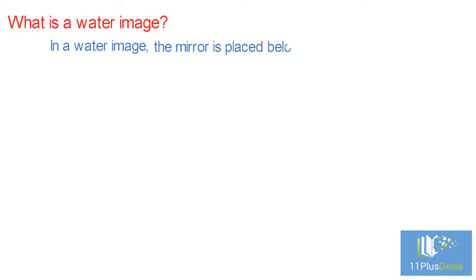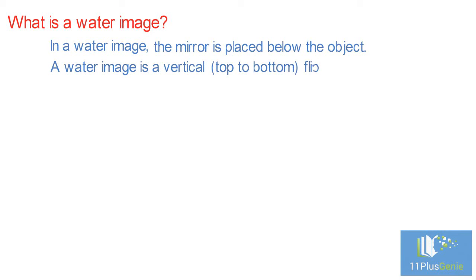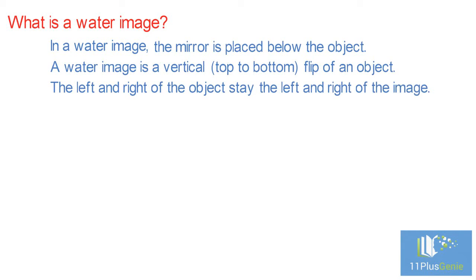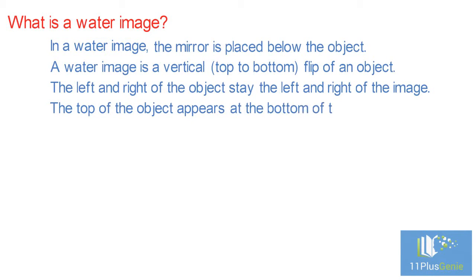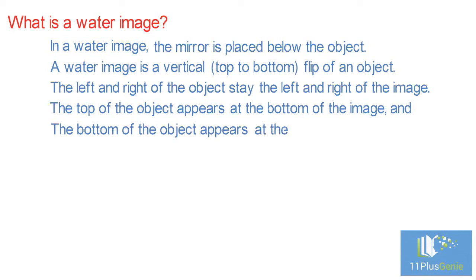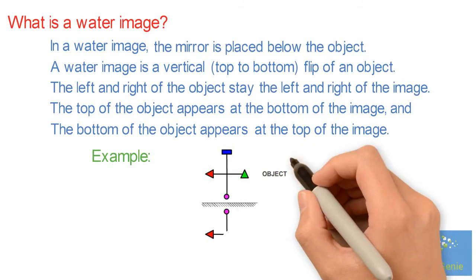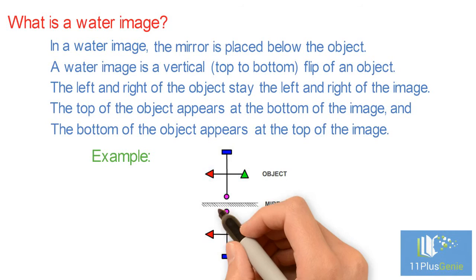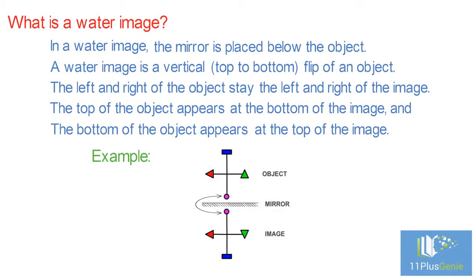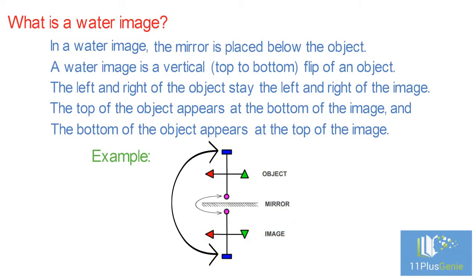What is a water image? In a water image the mirror is placed below the object. A water image is a vertical top to bottom flip of an object. The left and right of the object stay the left and right of the image. The top of the object appears at the bottom of the image, and the bottom of the object appears at the top of the image. In this diagram the circle is at the bottom of the diagram. In the water image it is at the top of the image. The rectangle is at the top of the diagram. In the water image it is at the bottom. The triangle points upwards in the diagram. It must point downwards in the image.